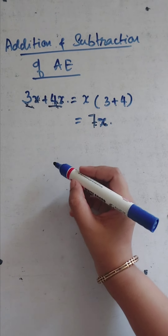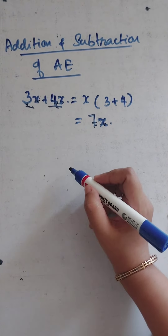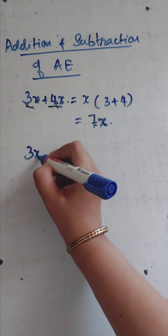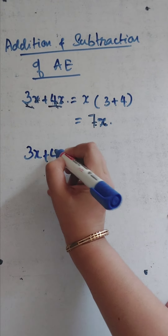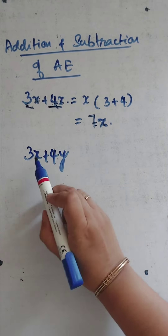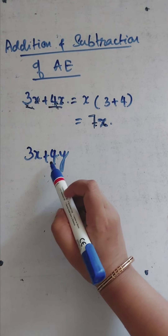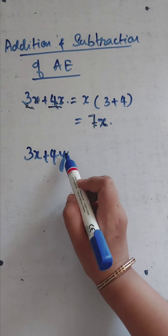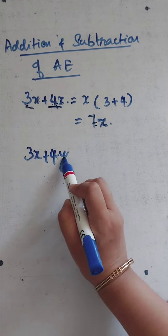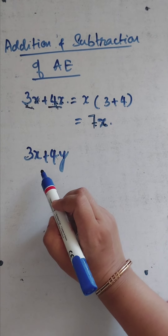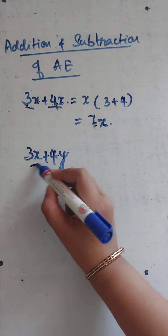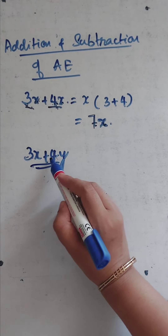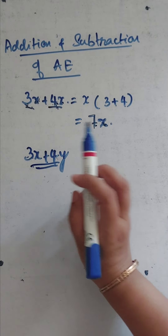Now what will happen if you add two unlike terms? Take 3x plus 4y. Can you add these? Can you just write 7? No, because the terms are different — they are unlike terms, not like terms. So it will remain as 3x plus 4y. You cannot simplify further.